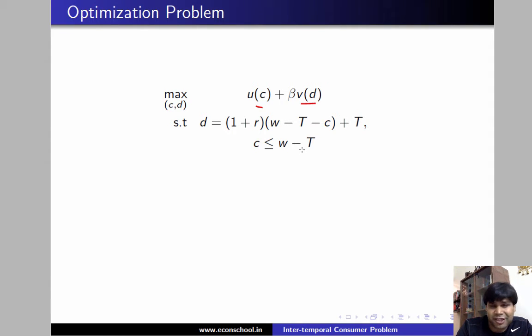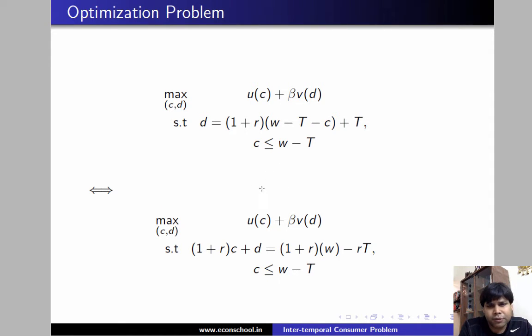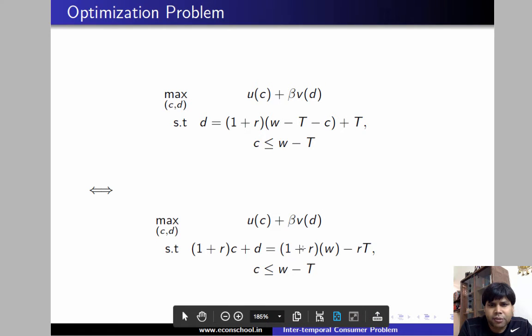This particular constraint can be rewritten as maximize UC plus beta VD, that's the objective which is the same as before. And we are just rewriting the constraint in the following way. We are just taking this 1 plus RC term to the left hand side and the right hand side is going to look like this. And similarly this particular constraint is going to be exactly the same as before.